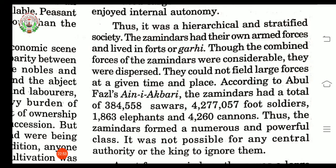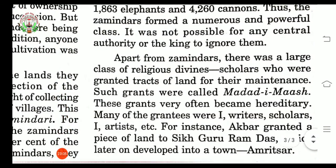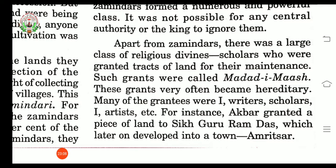Apart from zamindars, there was a large class of religious divines — meaning persons related to God. They were scholars who were granted tracts of land for their maintenance. Such grants were called Madadeh Mash. These grants very often became hereditary, meaning they also passed from one person to another through succession.